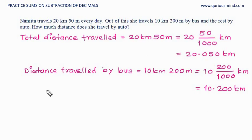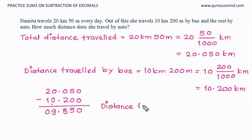Align the decimal points. Decimal point exactly below these. So the distance traveled by auto is 9.850 kilometers.